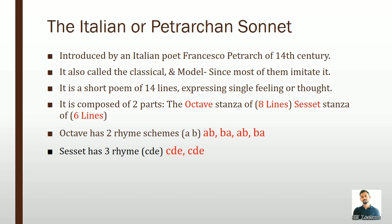It is a short poem of 14 lines expressing a single feeling or thought. It is composed of two parts: the octave, which is a stanza of eight lines, and the sestet, which is a stanza of six lines. The octave follows the rhyme scheme a b b a a b b a, and the sestet follows c d e c d e. It is a short lyric of 14 lines.